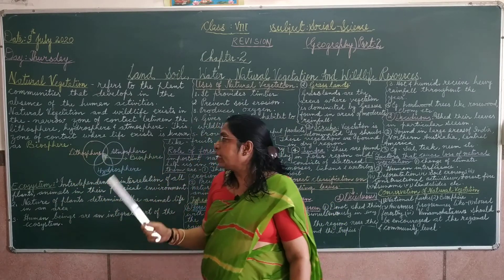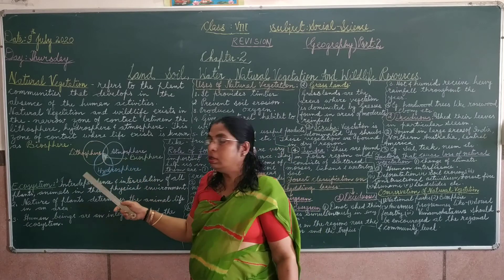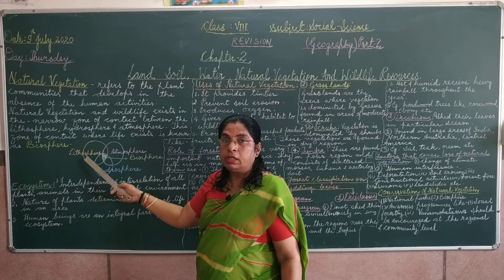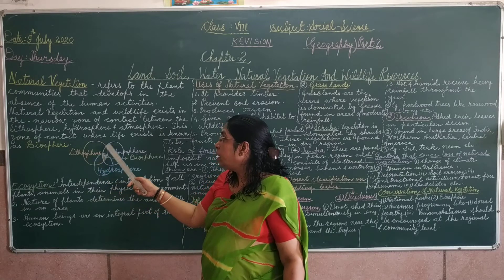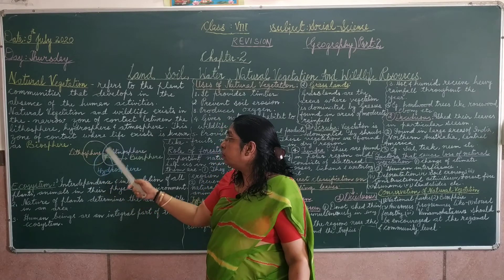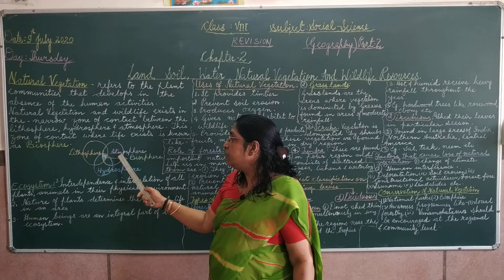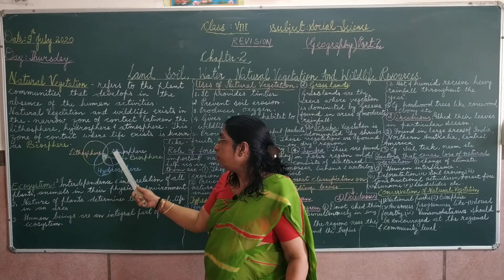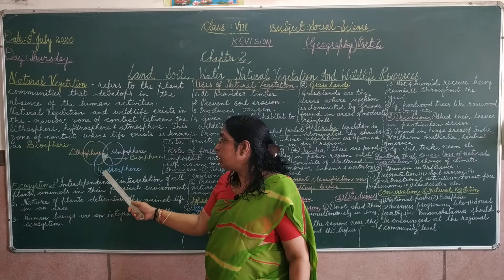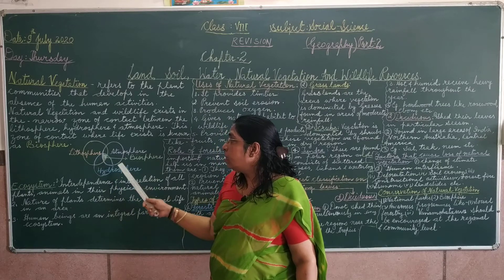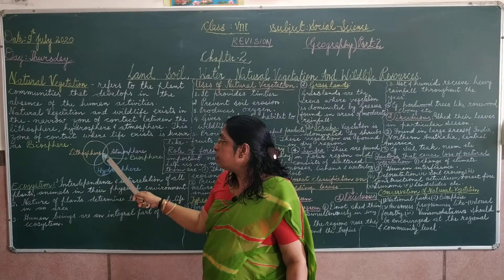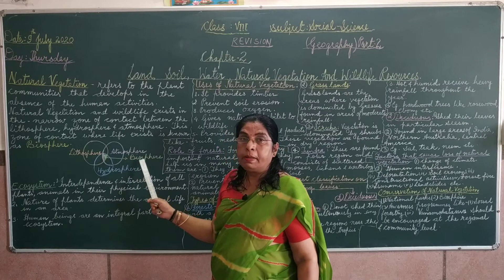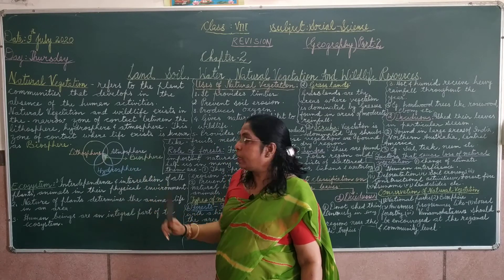According to the diagram you see on the board, first comes lithosphere, the orange circle. The purple circle represents atmosphere. The blue circle represents hydrosphere, and the narrow zone between them represents biosphere.